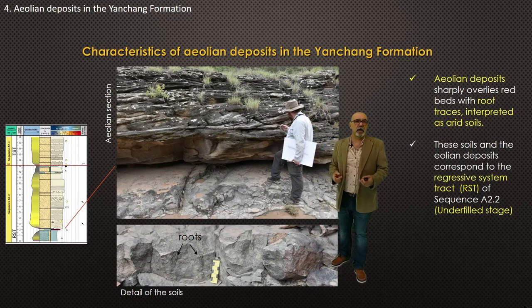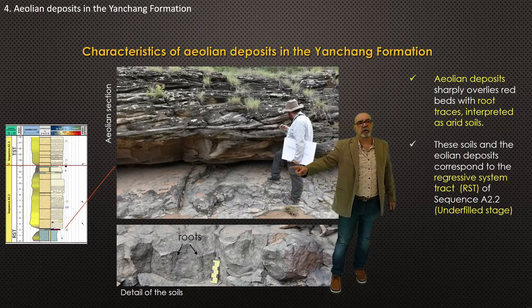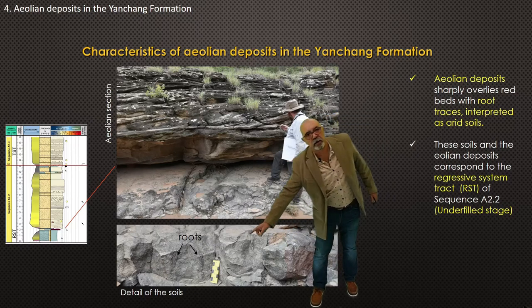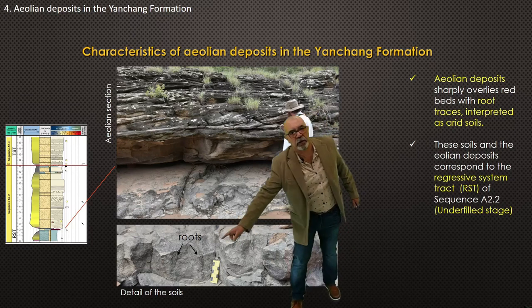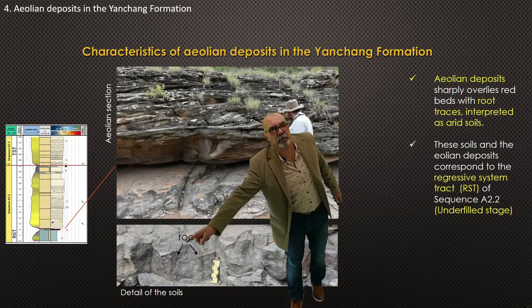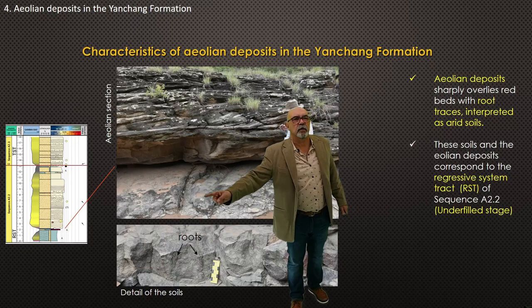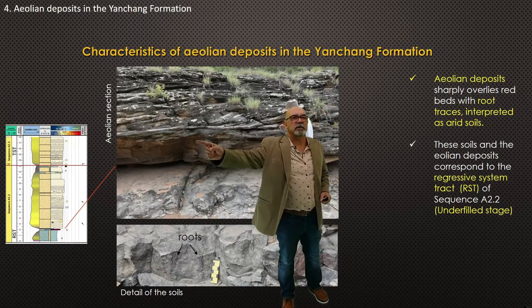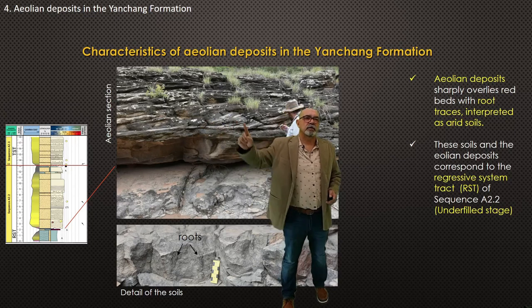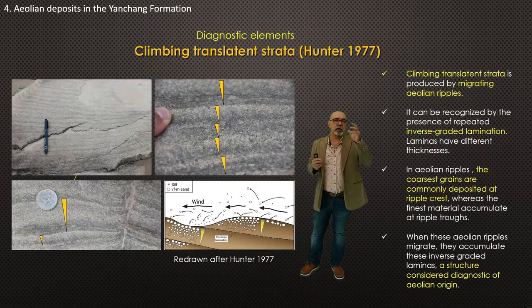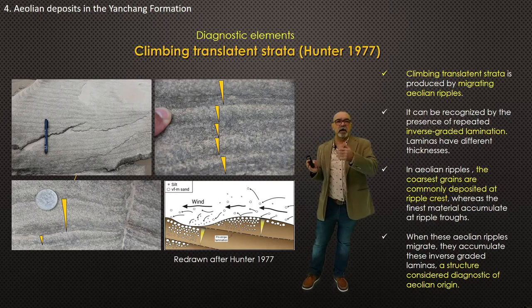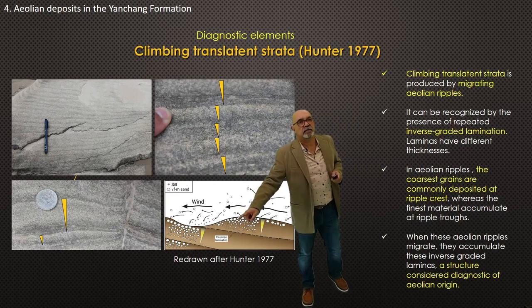In this photograph, you can see some details of the lower boundary of these aeolian deposits — these red beds with well-recognized roots and calcareous nodules related to soils in this part, and sharply above you have sandstone with crossbedding. This crossbedding is very interesting because, if you look at it in detail, you can recognize many sedimentary structures that are considered diagnostic of aeolian origin — for example, climbing translatent stratification.